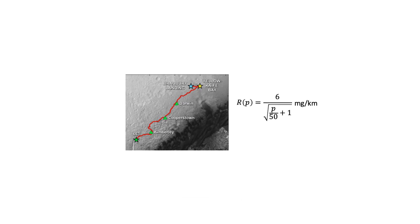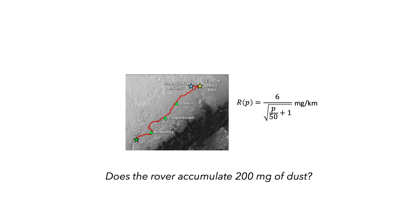The rover is following a 100-kilometer path. The rate at which dust will accumulate on the solar panels can be modeled using this function, where p is the position along the path and r is measured in milligrams of dust per kilometer traveled. The goal is to figure out whether the rover's solar panels will accumulate 200 milligrams of dust if it follows this route.